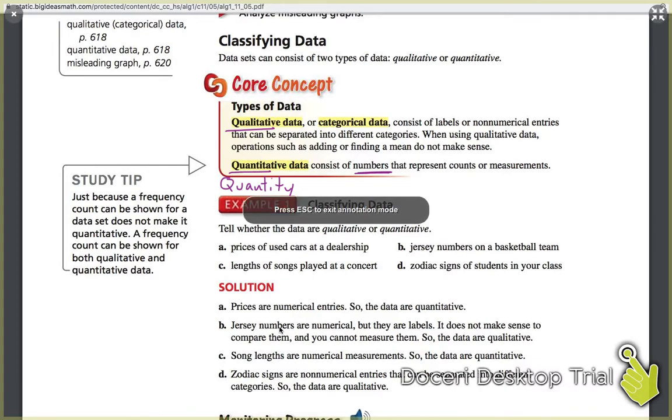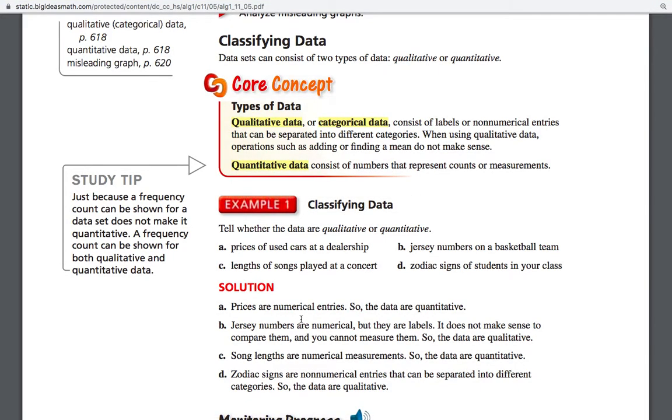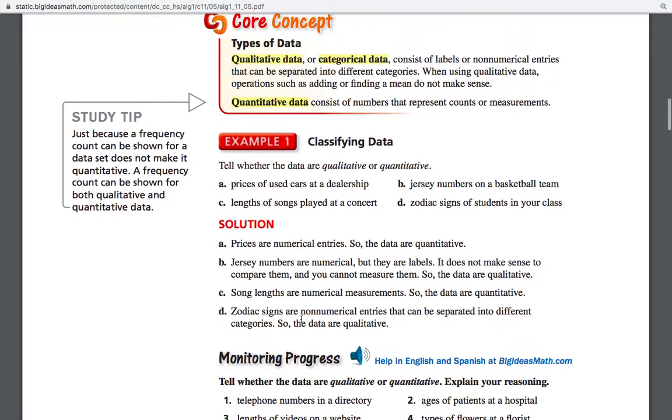I was going to say Jersey numbers because it's down here, but that's going to take a little explaining. So they're going to ask you whether it's qualitative or quantitative, whether you're dealing with numbers, represent counts or measurements, or whether you're representing a label.